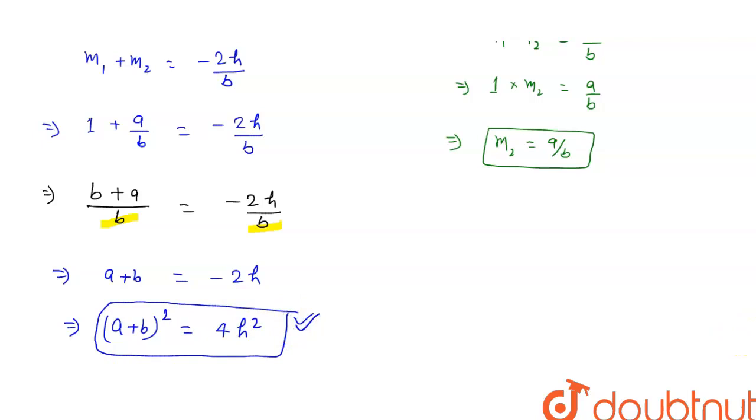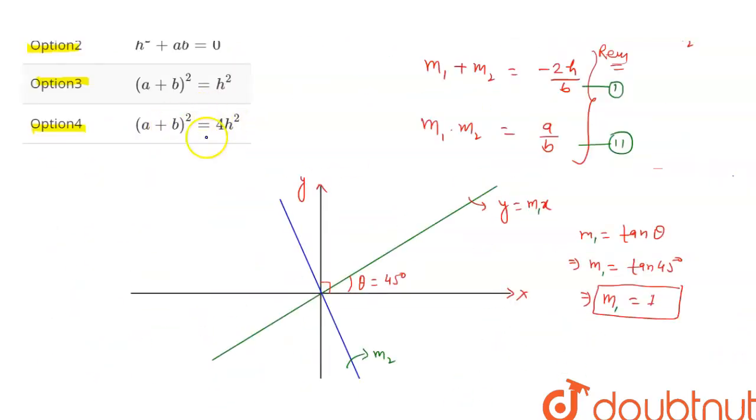Which is in the options, I think fourth: (a + b)² = 4h². So the fourth option will be correct. Thank you.